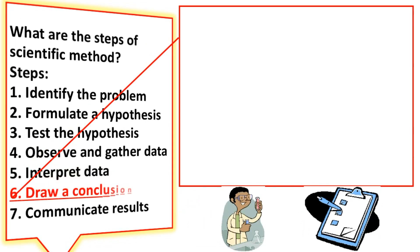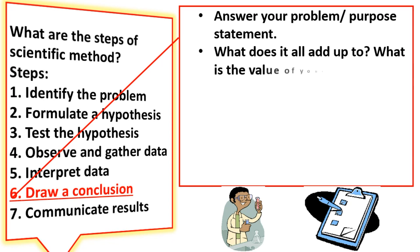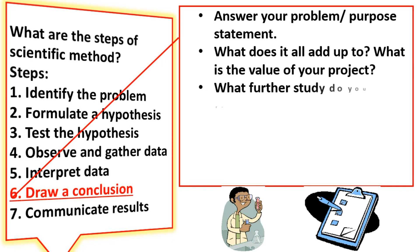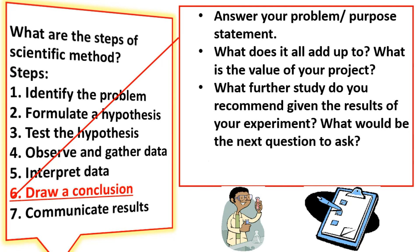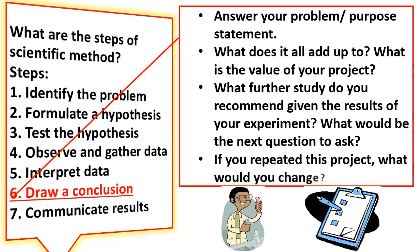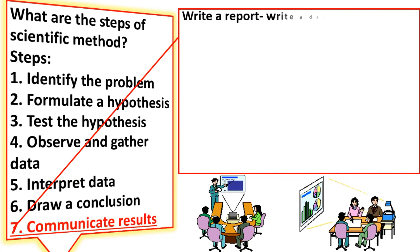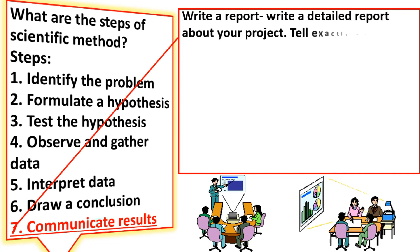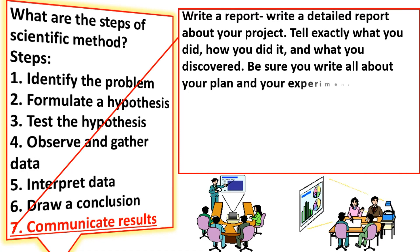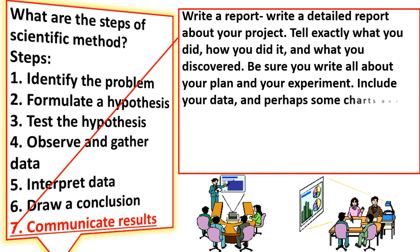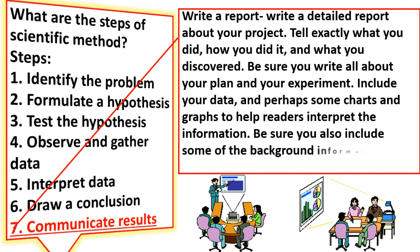Step 6: Draw a conclusion. Answer your problem-purpose statement — what does it all add up to? What is the value of your project? What further study do you recommend given the results of your experiment? What would be the next question to ask? If you repeated this project, what would you change? Step 7: Communicate results. Write a detailed report about your project. Tell exactly what you did, how you did it, and what you discovered. Be sure you write all about your plan and your experiment. Include your data and perhaps some charts and graphs to help readers interpret the information, as well as background information you learned.